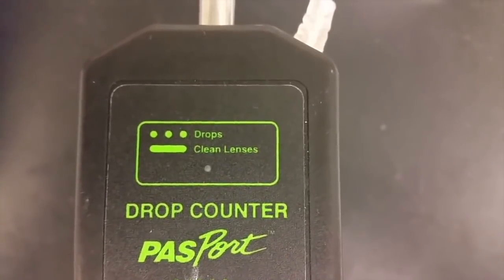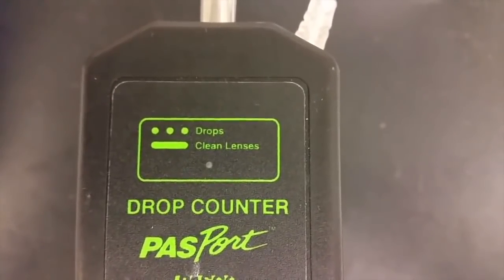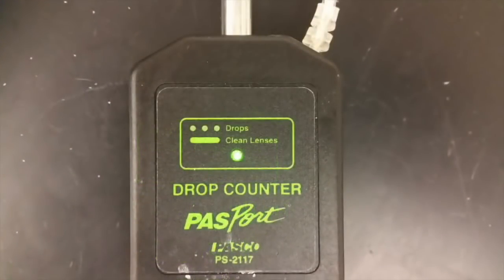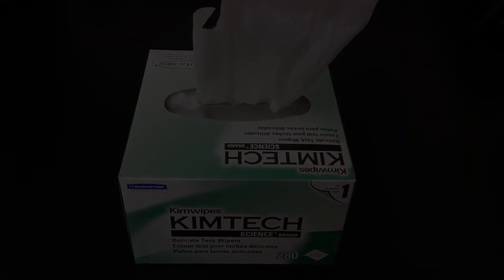This is also a good time to check that the drop counter isn't dirty. There's a small green light on the top of the drop counter that will blink only as a drop passes through to be counted. If you look at your drop counter now and the light is on constantly then the drop counter needs to be cleaned off using a kim wipe so it can record the drops correctly.